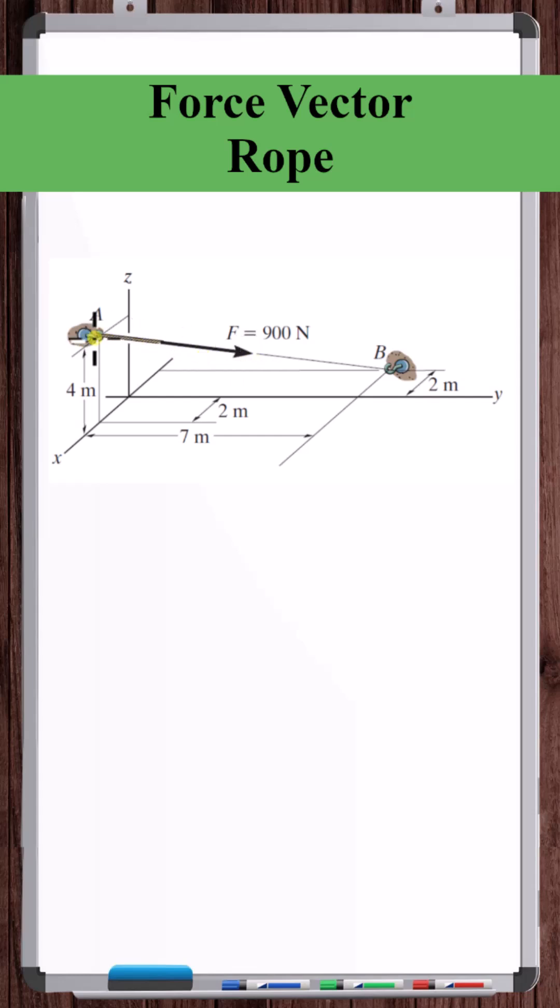Let's express the force in this rope as a vector. We know the magnitude of the force and we can get a position vector that's along the direction of the force from A to B. What we need to do is use that position vector to create a unit vector from A to B. Then we can multiply this magnitude by that unit vector to get the force vector.